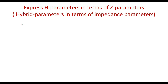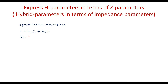First, let me write the definition of hybrid parameters or the equations of hybrid parameters. H parameters are represented as: V1 = H11·I1 + H12·V2, and I2 = H21·I1 + H22·V2. Here, V1 and I2 are dependent variables, and I1 and V2 are independent variables. I will call these equation A and equation B.